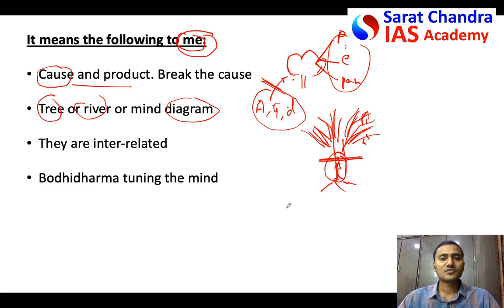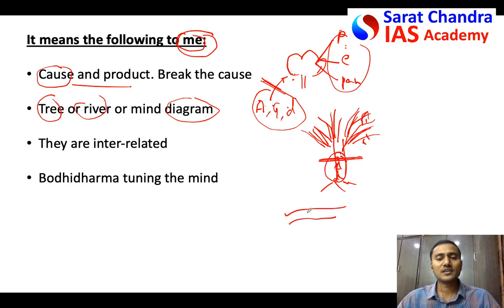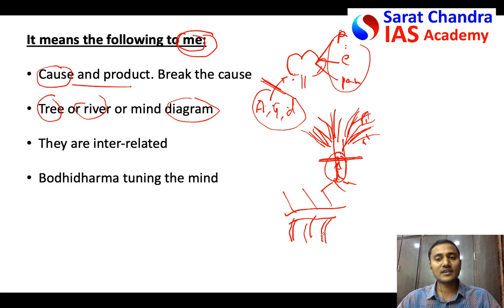Or you can use a river analogy. A river gets its water from several tributaries — these tributaries represent anger, greed, and delusion. Once you remove the tributaries, the river water automatically dries up. Some creative diagram like that you can draw if you want — just pick any one creative illustration, not all of them.